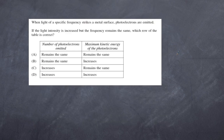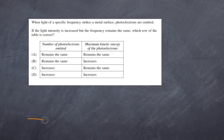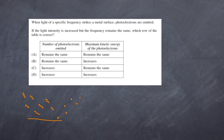When light of a specific frequency strikes a metal surface, photoelectrons are emitted. If the light intensity is increased but the frequency remains the same, which row of the table is correct? The fundamental concept here is that if photons hit a surface, the number of photons determines the number of electrons emitted. Because the number of electrons gives us the current, the number of photons relates to the current that flows — and that is all about intensity.